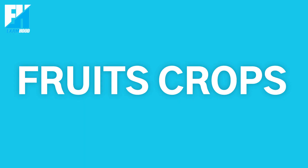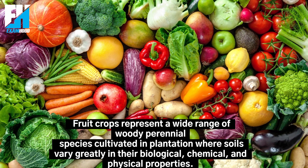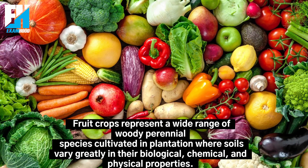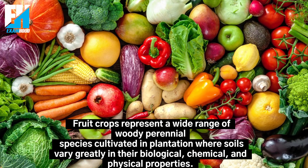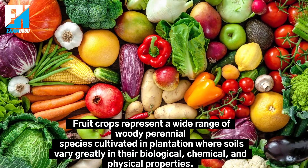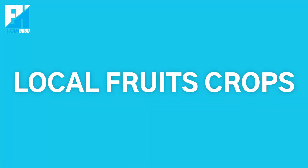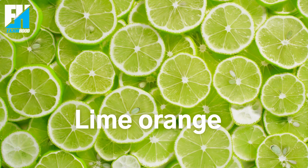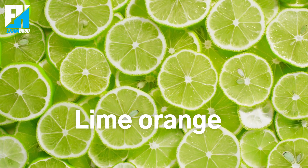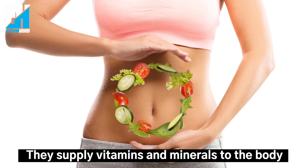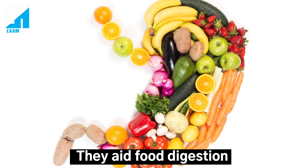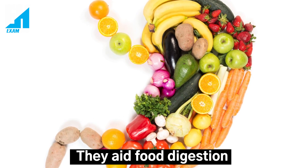In our previous class, we discussed fruit crops. Fruit crops represent a wide range of woody perennial species cultivated in plantations where soils vary greatly in their biological, chemical, and physical properties. Local fruit crops include oranges, mangoes, apples, and limes. Uses of fruit crops: they supply vitamins and minerals to the body and they aid food digestion.